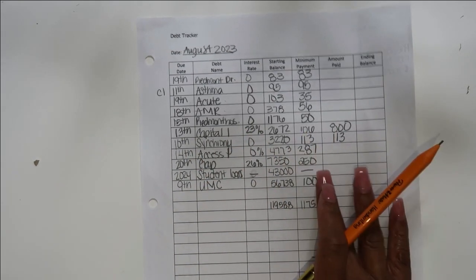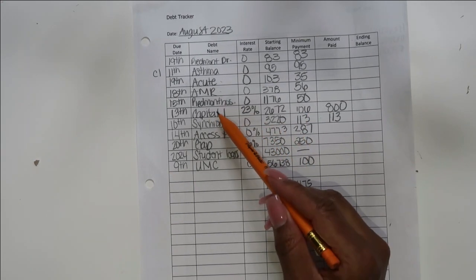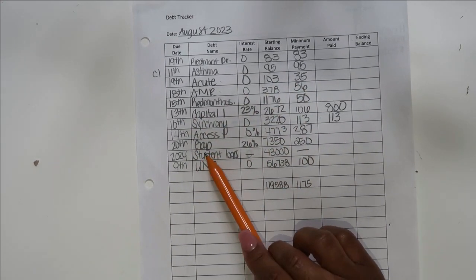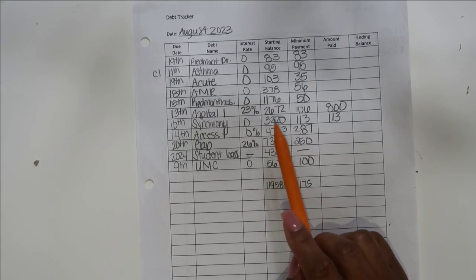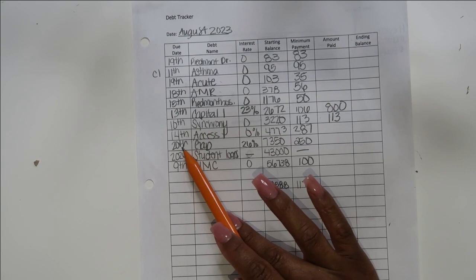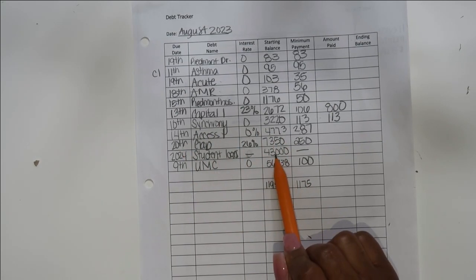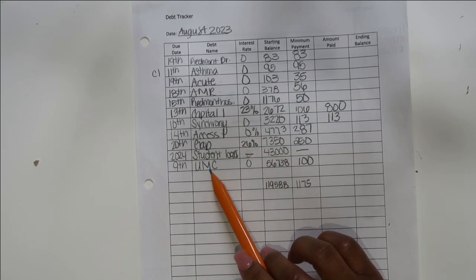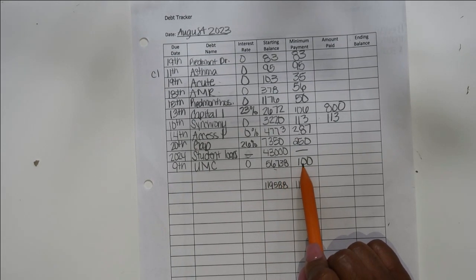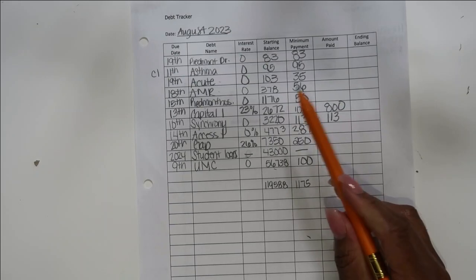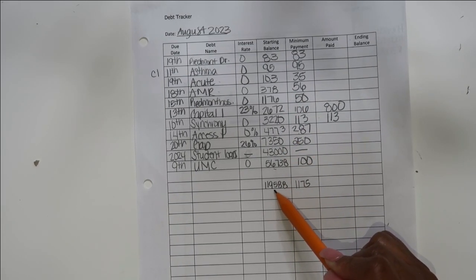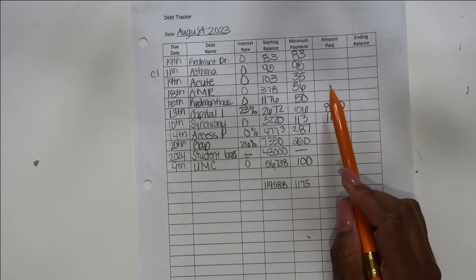Excess One, $4,773, due on the 14th. I'm going to pay $287. I forgot to say Capital One is due on the 13th and Synchrony is due on the 10th. Gap, 26% interest rate, $7,350. I'm gonna pay $250 on the 20th. Student loans, $43,000, not paying anything for that. And then UMC, $56,738. I'm going to pay $100 on the ninth.